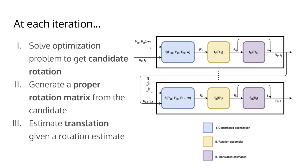In the second stage, we convert the solution from the previous stage into a valid rotation matrix through a process akin to Gram-Schmidt orthogonalization. In the third and final stage, we employ our new rotation estimate to find the optimal translation.